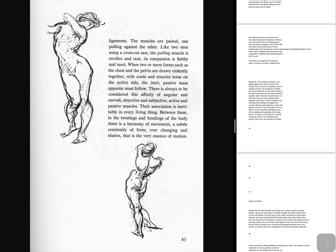Light and shade: Shade with the idea that light and shade are to aid the outline you have drawn in giving the impression of solidity, breadth and depth. Keep before you the conception of a solid body of four sides composed of a few great masses, and avoid all elaborate and unnecessary tones which take away from the thought that the masses or planes on the sides must appear to be on the sides while those on the front must appear to be on the front of the body. No two tones of equal size or intensity should appear directly above one another or side by side — their arrangement should be shifting and alternate. There should be a decided difference between the tones. The number of tones should be as few as possible. Avoid all elaborate or unnecessary tones and do not make four tones or values where only three are needed. It is important to keep in mind the big, simple masses and to keep your shading simple, for shading does not make a drawing.